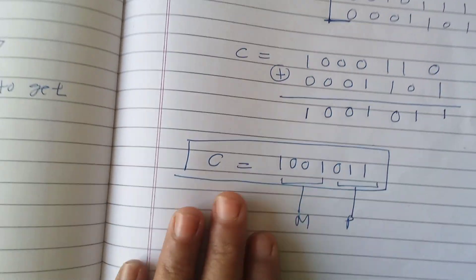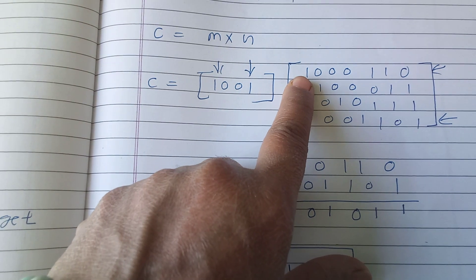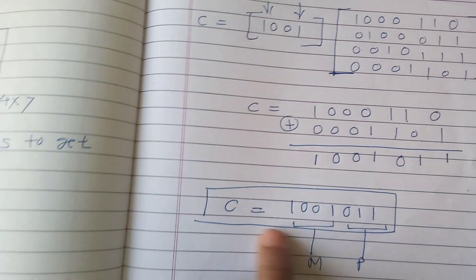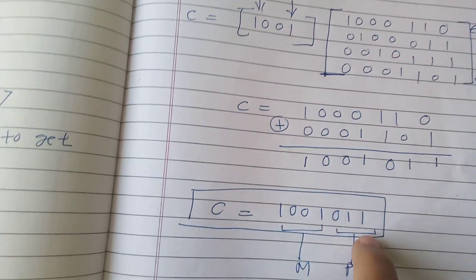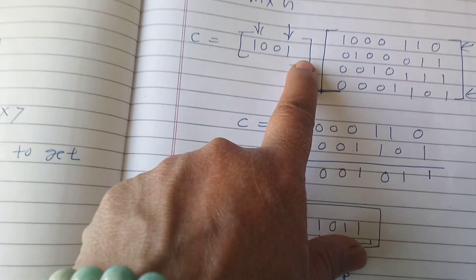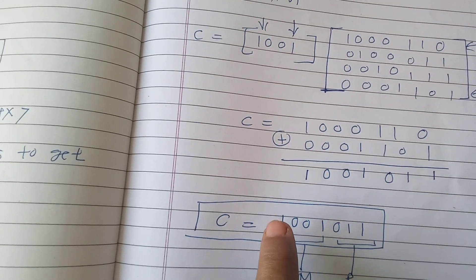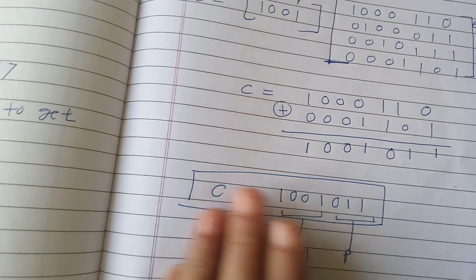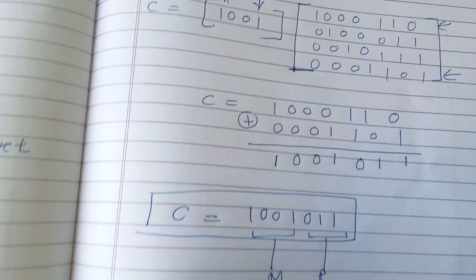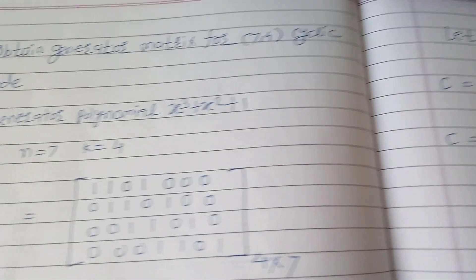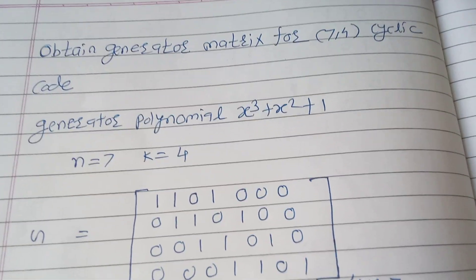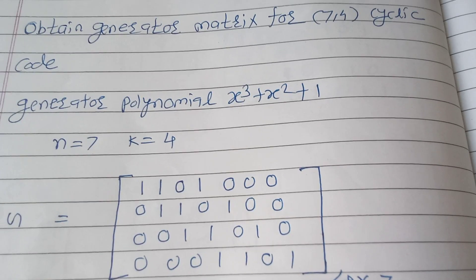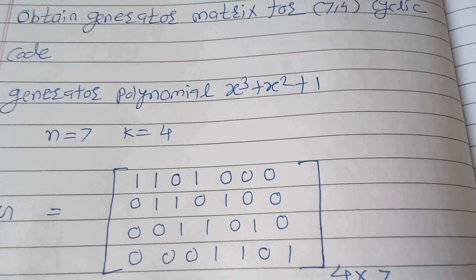The result is a codeword in systematic form, meaning you can identify the message word and the parity bits. The message word is 1001 and it is appended with parity bits 011, so you can distinguish between the message and the parity bits. This is the generator matrix formation for the cyclic code with generator polynomial x³+x²+1. In the previous video, we saw this with the polynomial x³+x+1.